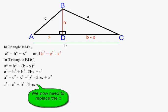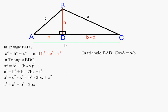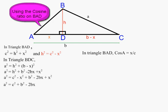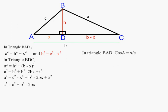We go back to triangle BAD. Using the cosine ratio, cosine of A would be x over c, because it's adjacent over hypotenuse. Rearranging that formula gives us an algebraic expression for x: x equals c times cosine A.